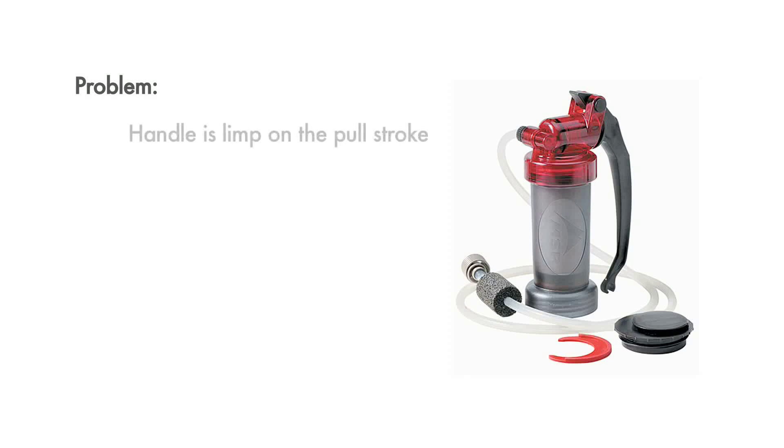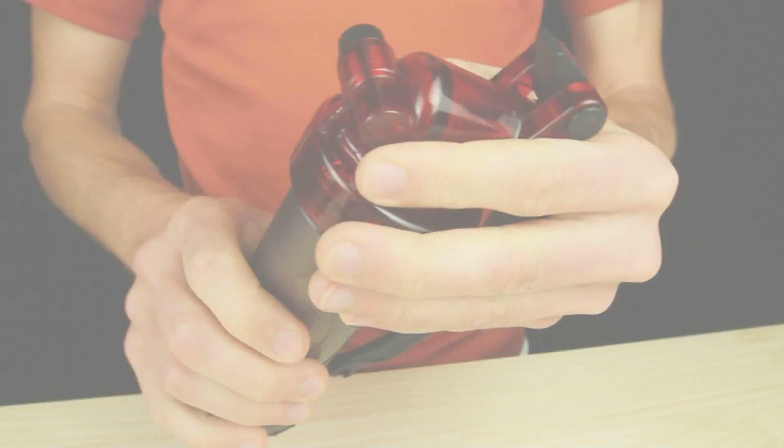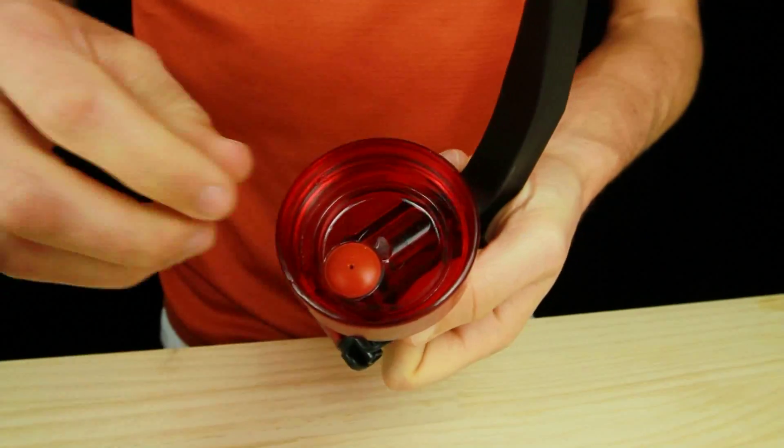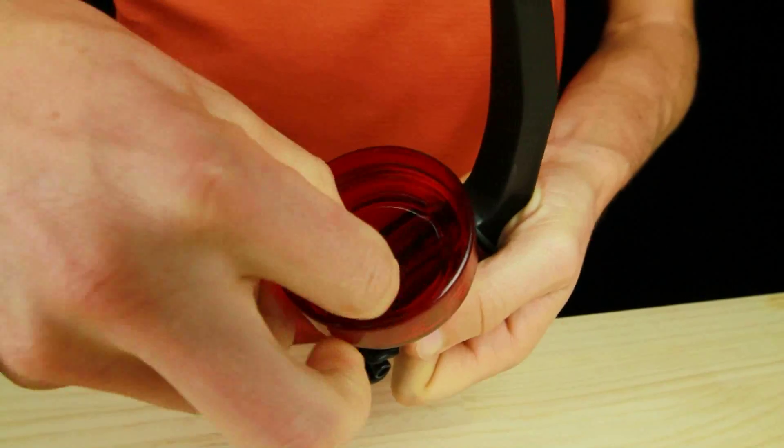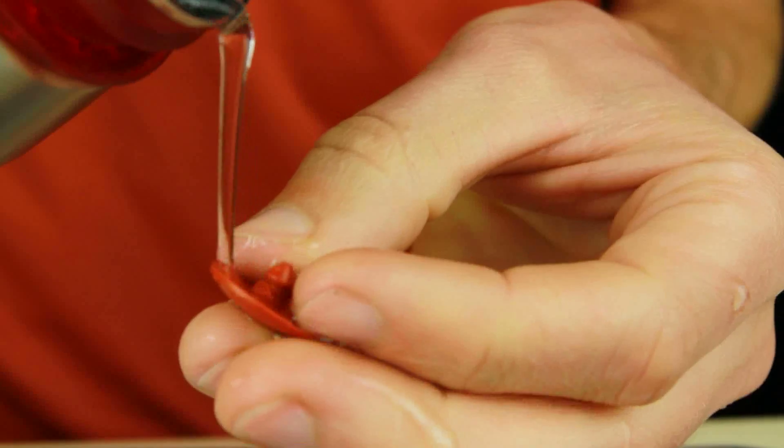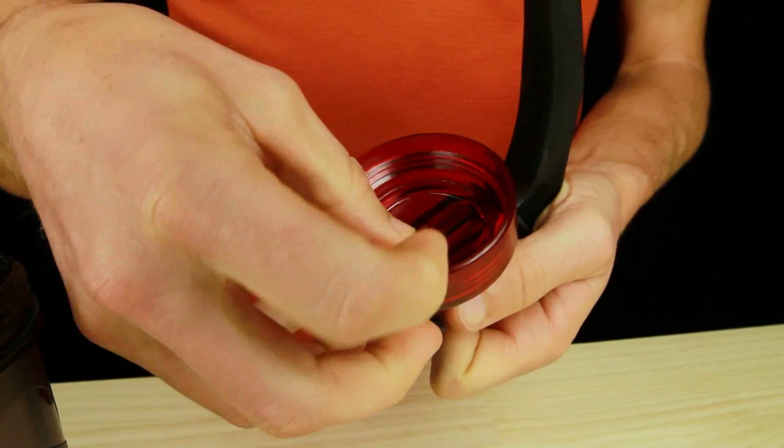If the pump handle feels limp on the pull stroke, the most likely cause is dirt caught in the umbrella valve. To clean the umbrella valve, locate it under the pump head. Pinch and gently pull to remove the valve. Thoroughly rinse the umbrella valve and pump head with clean water and then reinstall it firmly into place.